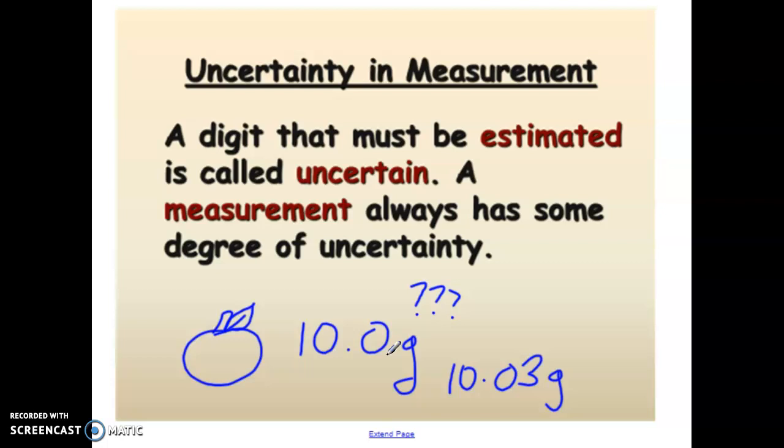Now some measurements are more detailed than others. So if I were to tell you this apple is approximately 10 grams, well 10.0 grams is a much better response than 10 grams. So typically, the more digits that are in your value, the more certain or the more accurate that data is.